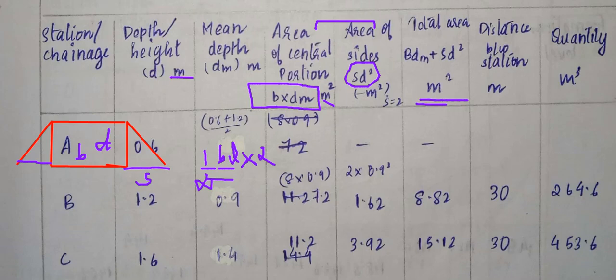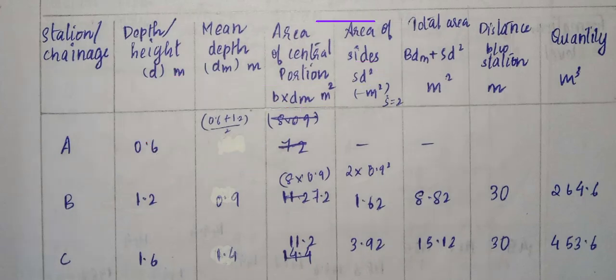The distance between station points is 30 meters. The quantity — volume — is calculated as total area multiplied by the length (distance between stations). This gives the volume of earthwork for each interval.